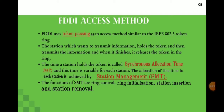FDDI uses token passing as its access method, similar to the IEEE 802.5 token ring. The station that wants to transmit holds the token, transmits its information, then releases the token back into the ring. The time a station holds the token is called Synchronous Allocation Time, or SAT, and this time is variable per station. The allocation of time is managed by Station Management, or SMT, whose functions include ring control, ring initialization, station insertion, and station removal.